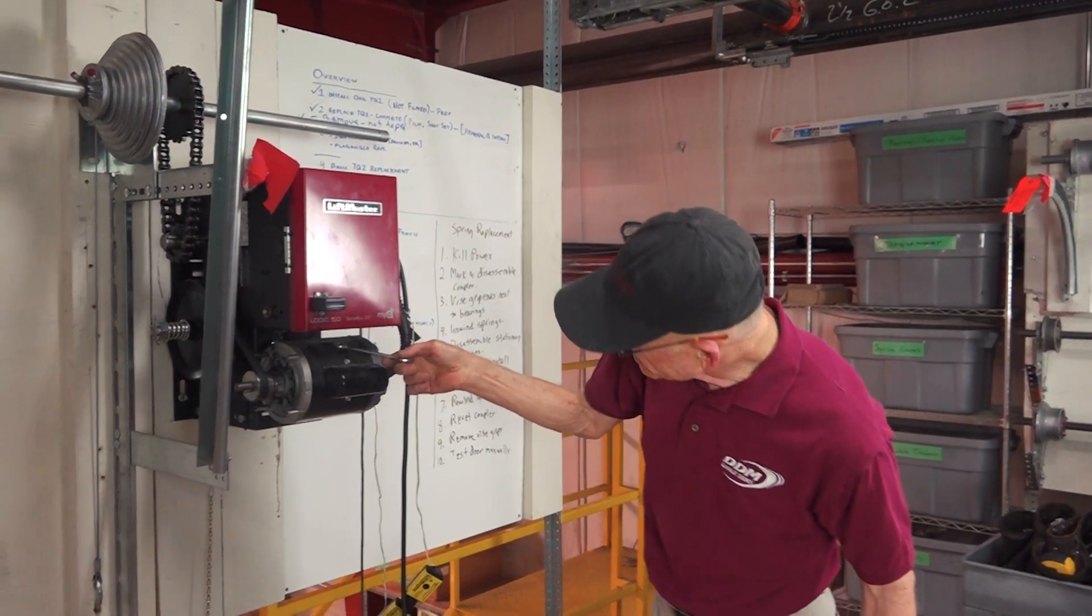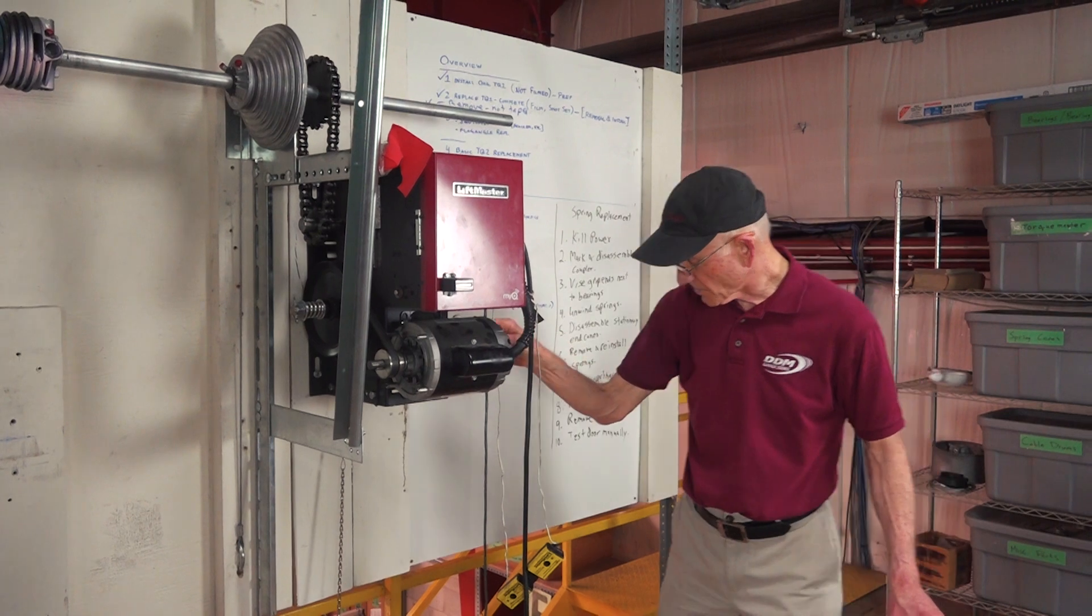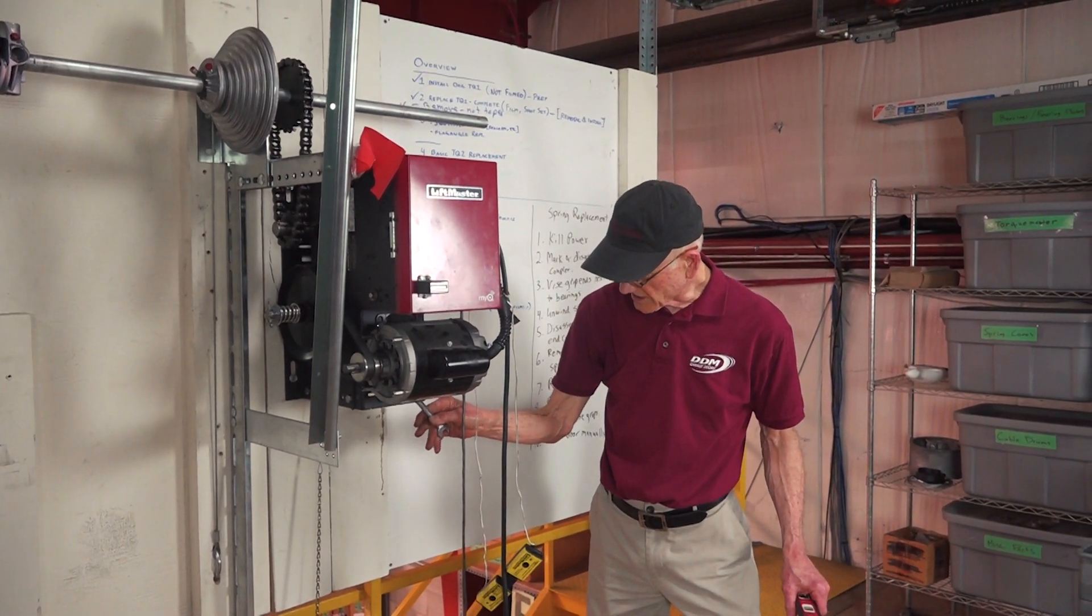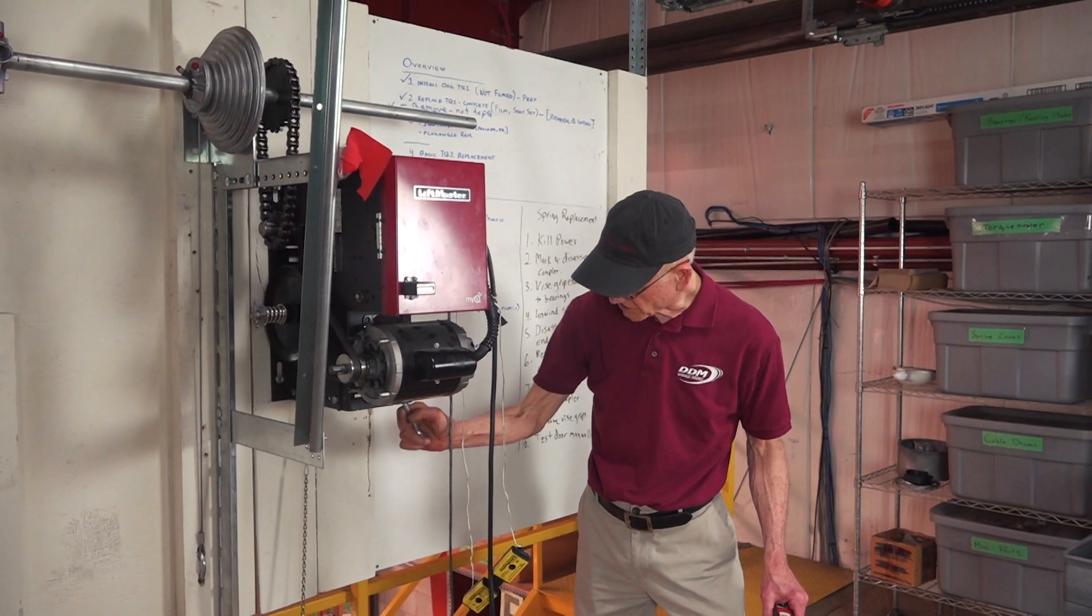The motor is mounted with four carriage bolts and nuts. So you go down to the bottom, and this one is easy to show at the bottom.